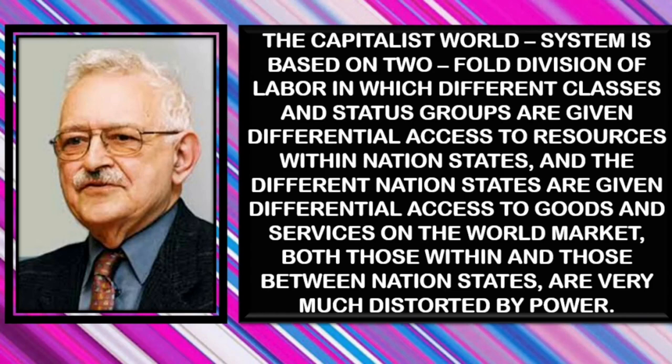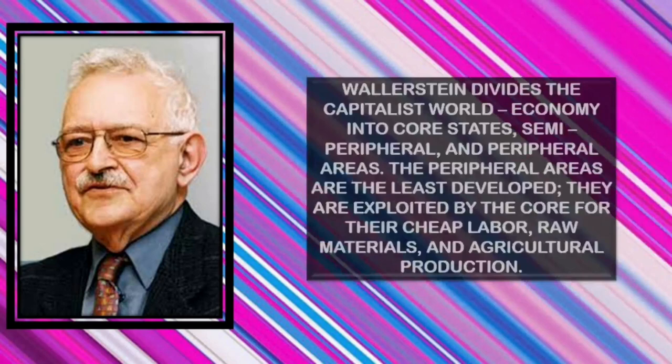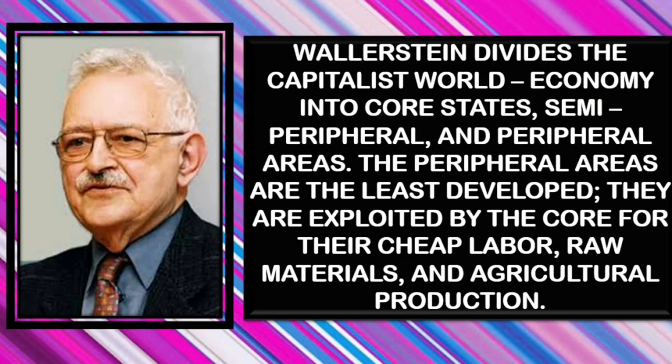Peripheral States. Wallerstein divides the capitalist world economy into core states, semi-peripheral, and peripheral areas. The peripheral areas are the least developed. They are exploited by the core for their cheap labor, raw material, and agricultural production.